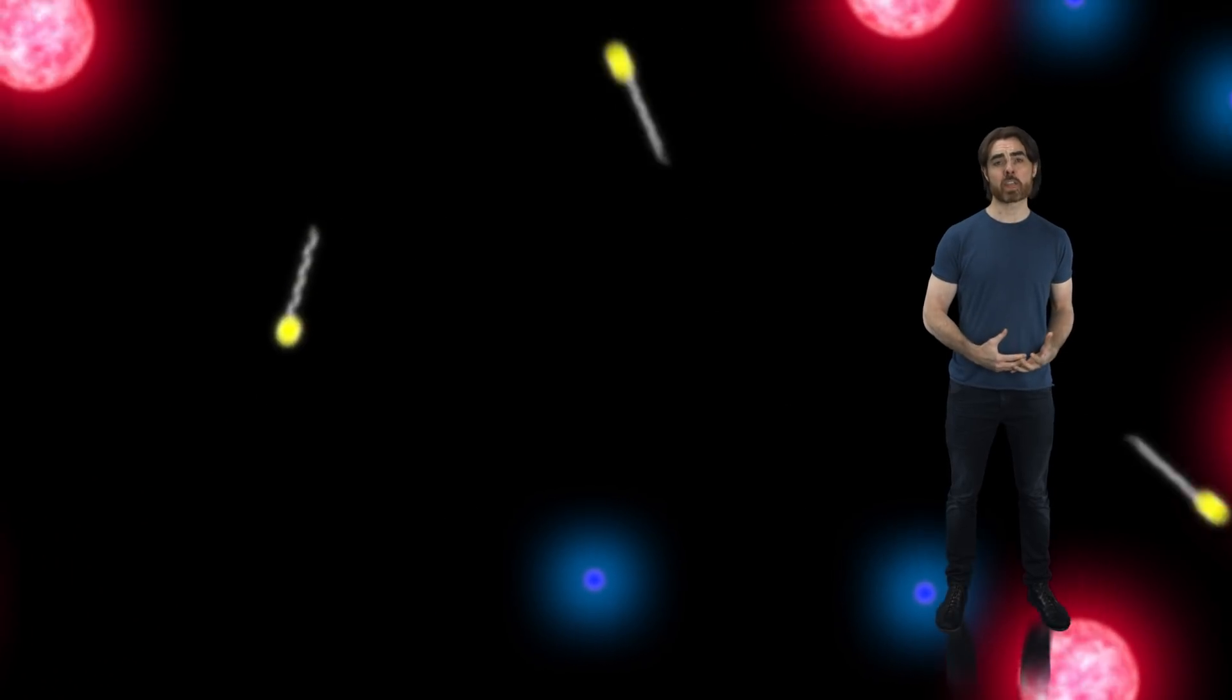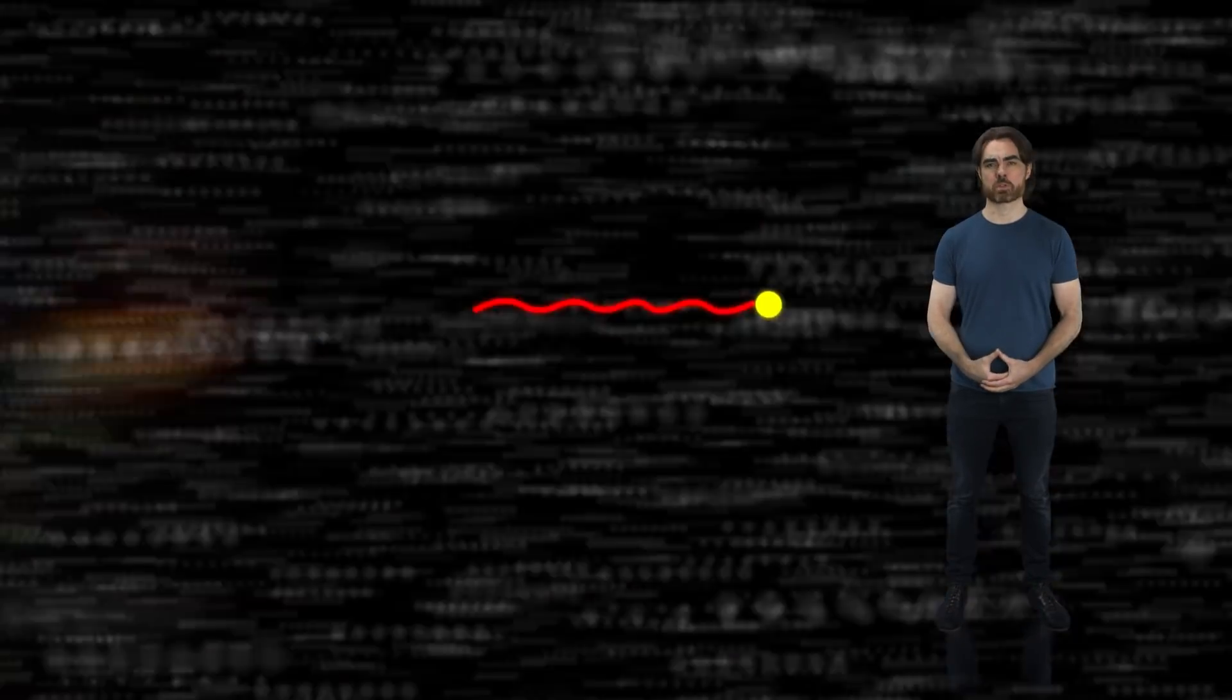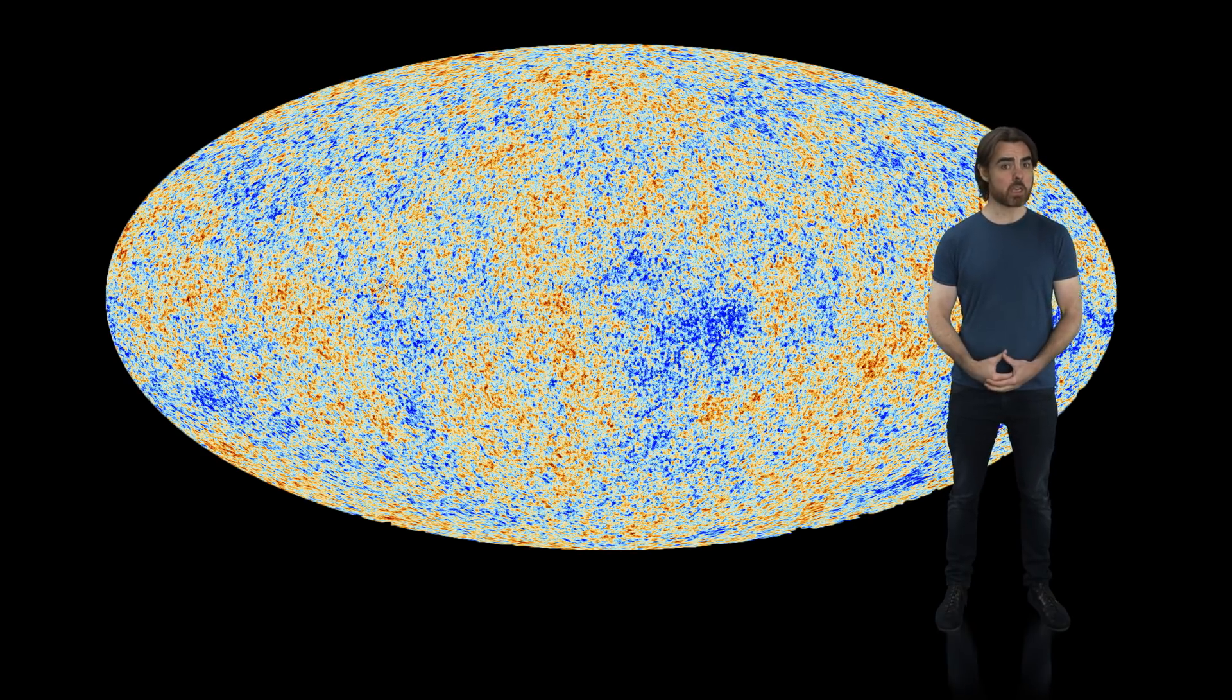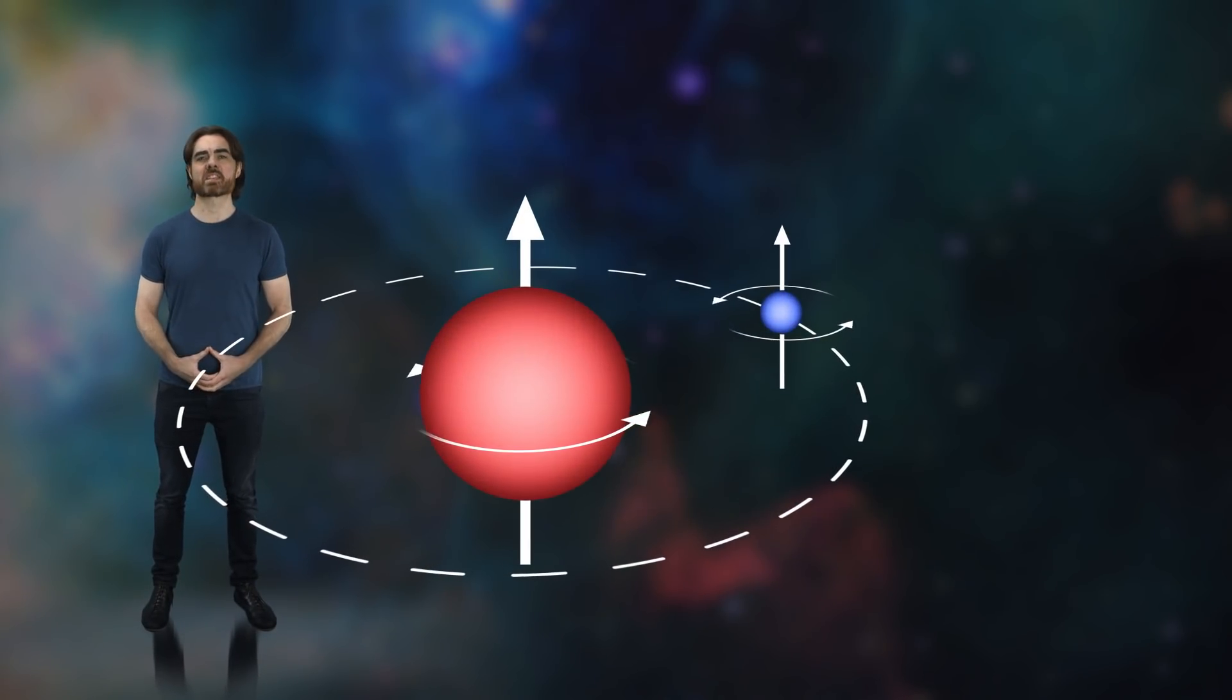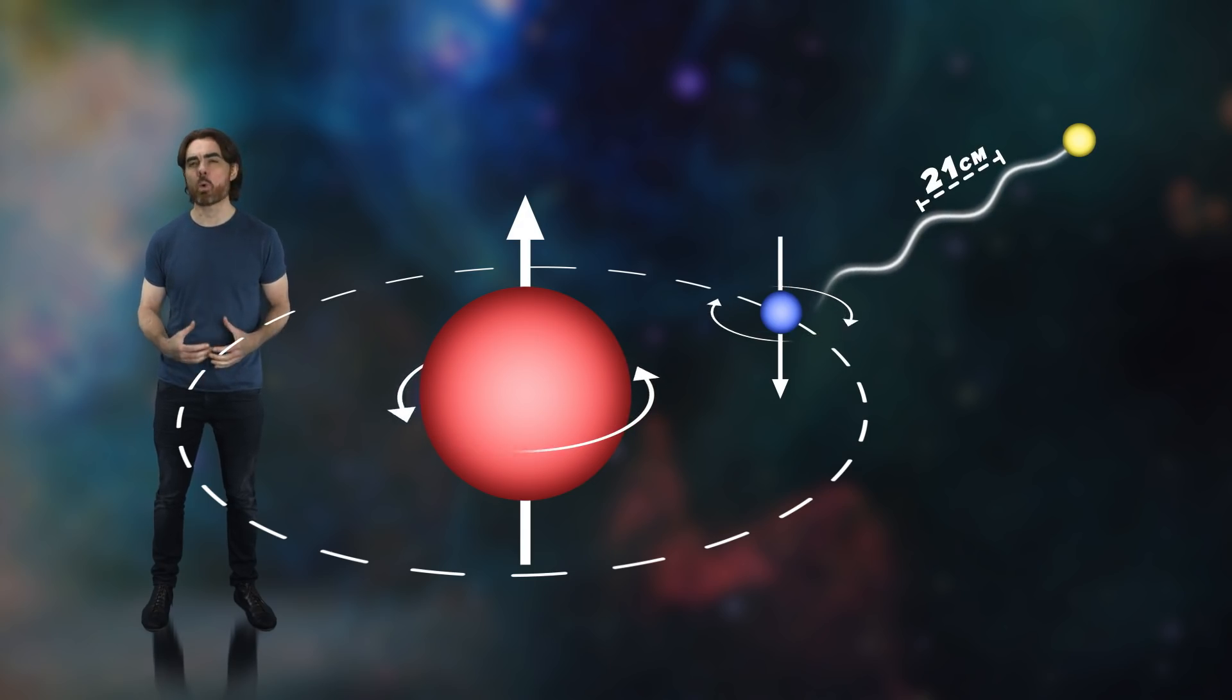So the very early universe was full of hydrogen gas and light. That light was the leftover heat glow from before those first hydrogen atoms formed. This is the cosmic microwave background radiation, or CMB. It's the oldest light that we can see, and we explained it in detail in a previous episode. We can also try to see the light signature from that very early hydrogen gas. We do that by looking for a very particular type of photon, the one that is released or absorbed when the ground state electron in hydrogen flips its spin direction. That photon has a wavelength of 21 centimeters, which is radio light.